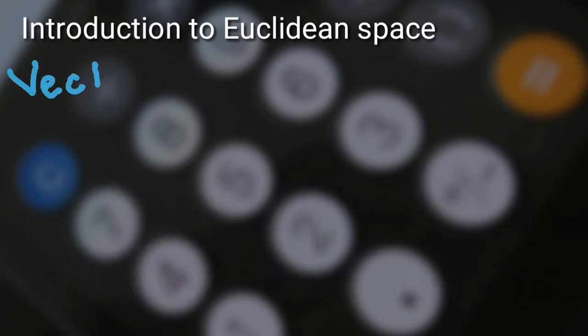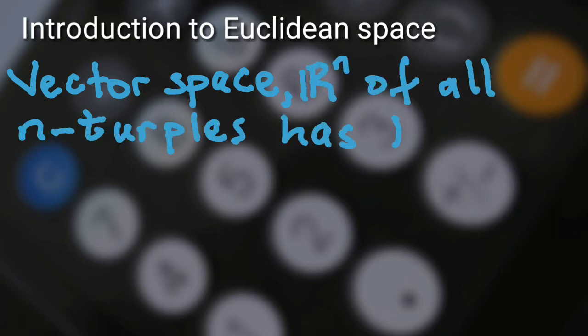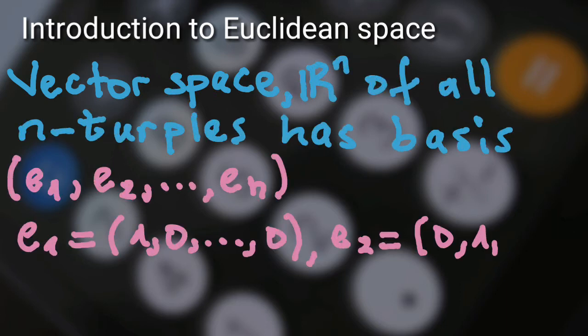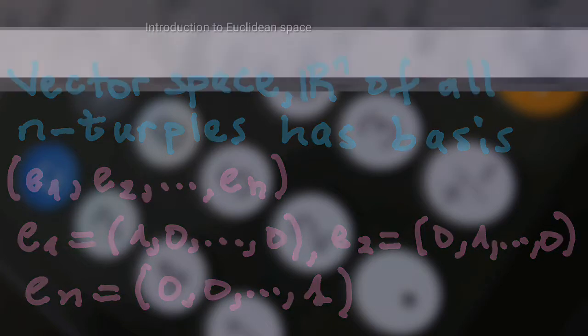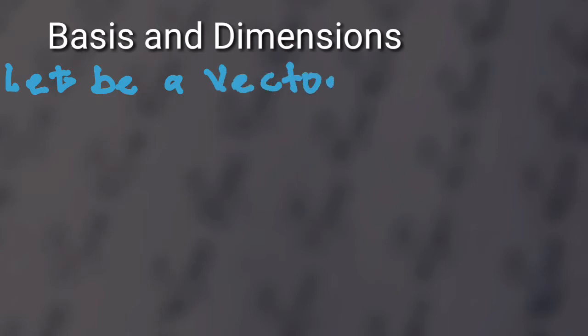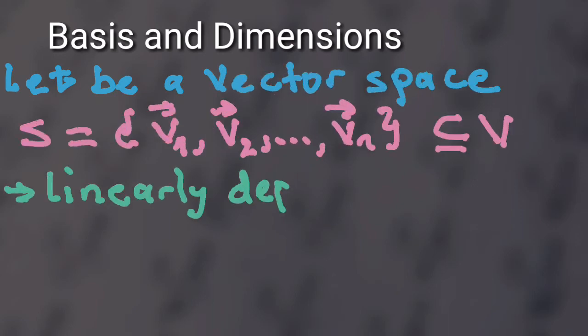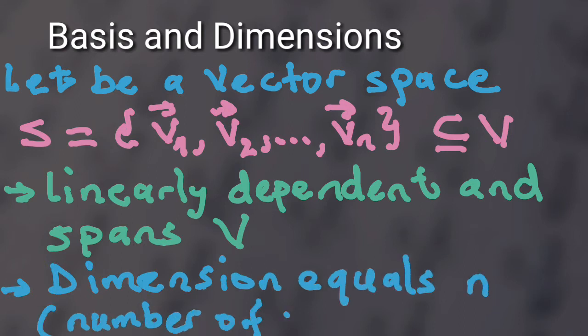Generally, the vector space R to the n of all n-tuples of real numbers has basis e1, e2 up to en, where e1, e2, and en are shown. This can be generalized to vectors of matrices and functions in any arbitrary dimension. Let V be a vector space. Then the set S = {v1, v2, ..., vn}, which is a subspace of V, is a basis if S is linearly independent and spans V. The dimension is equal to the number of elements found in S.